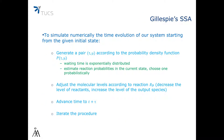To simulate numerically the time evolution of our system starting from a given initial state, we generate a pair tau and mu according to the probability density function P of tau and mu. The waiting time is exponentially distributed, and we estimate reaction probabilities in the current state and choose one probabilistically. Then we adjust the molecular levels according to reaction R_mu — decreasing the level of reactants and increasing the level of output species — then advance time to t plus tau and iterate the procedure.